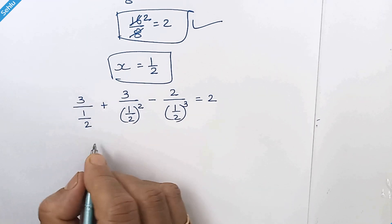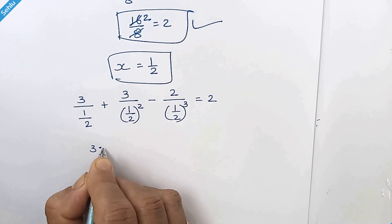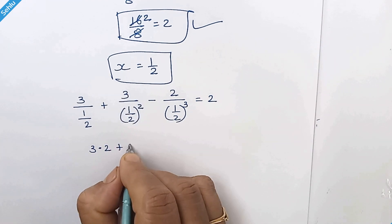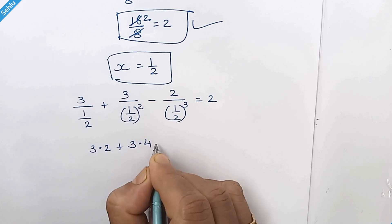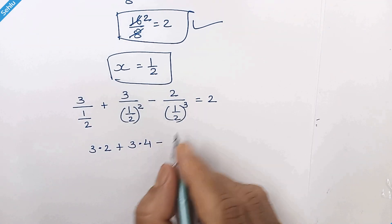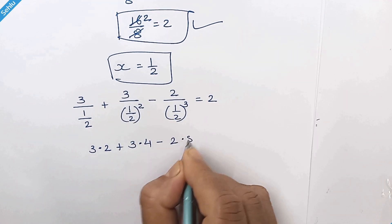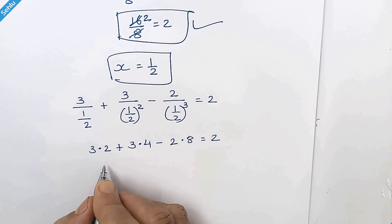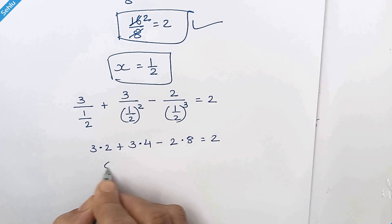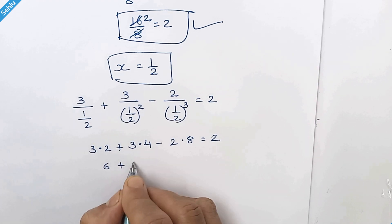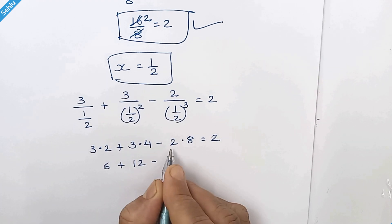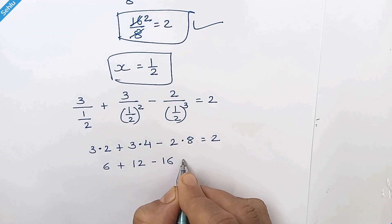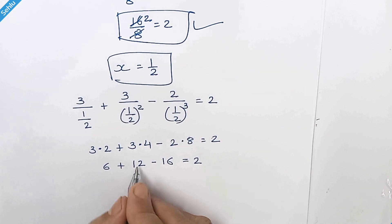This 2 will be placed here so we have 3 times 2 plus 2 square is 4 and it will be placed here so we have 3 times 4 minus 2 cube is 8, 2 times 8 is equal to 2. 3 times 2 is 6 plus 3 times 4 is 12 minus 2 times 8 is 16.